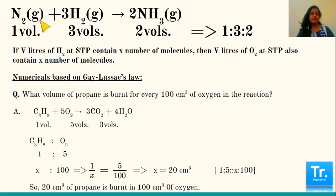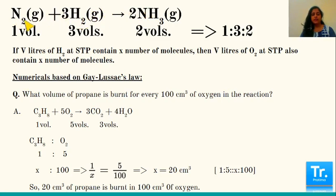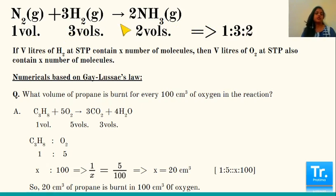To illustrate Gay-Lussac's law: nitrogen and hydrogen react to give ammonia, all in the gaseous state. When we balance the equation, the ratio is 1:3:2 — that is 1 volume of nitrogen, 3 volumes of hydrogen, and 2 volumes of ammonia. For example, 10 cm³ of nitrogen will react with 30 cm³ of hydrogen to give 20 cm³ of ammonia, sticking to the ratio 1:3:2.